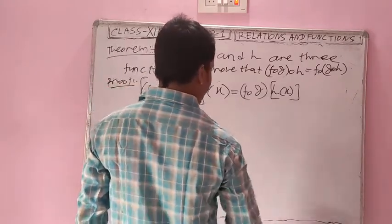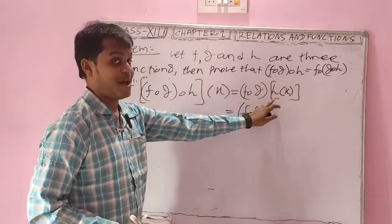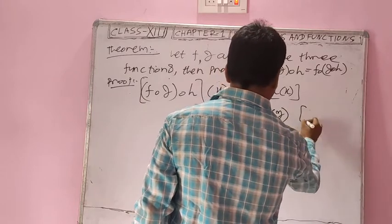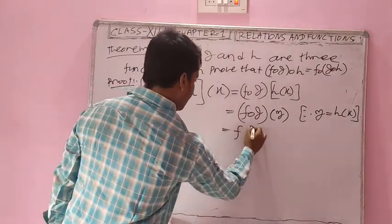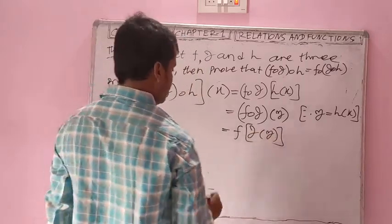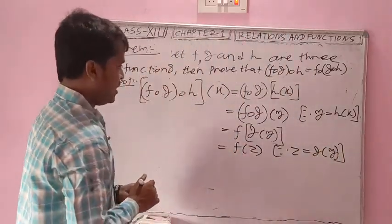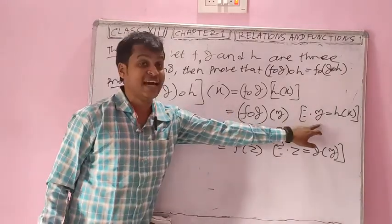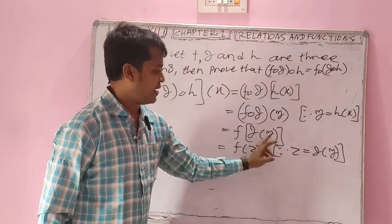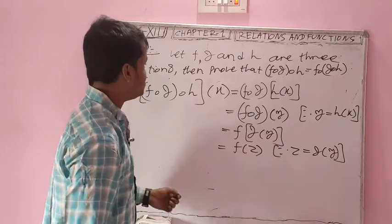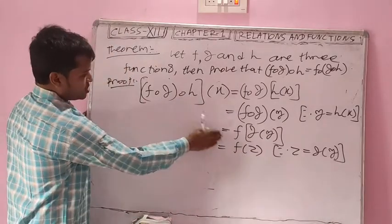Since h is a function from A to B, suppose the value of h(x) is y, so y = h(x). Then this value becomes f(g(y)). Now suppose the value of g(y) is z, so z = g(y), since g is a function from B to C. So the left-hand side value is f(z).